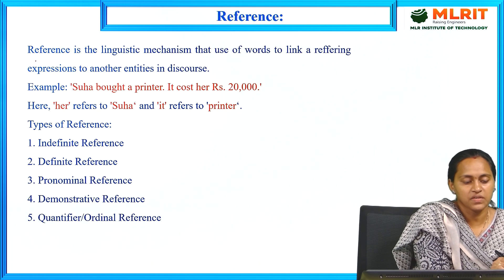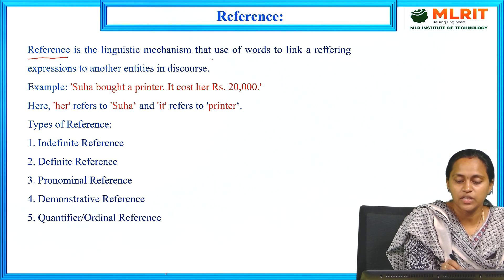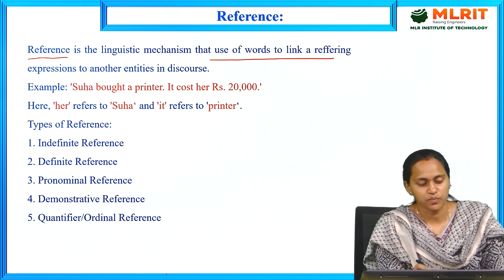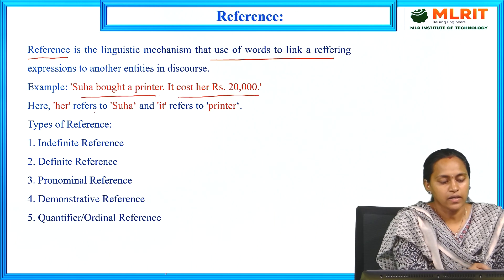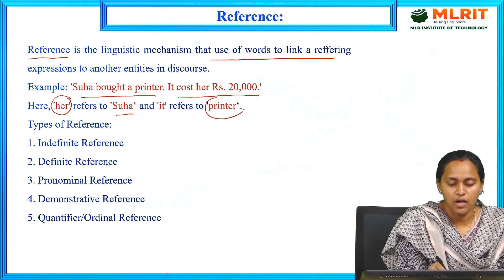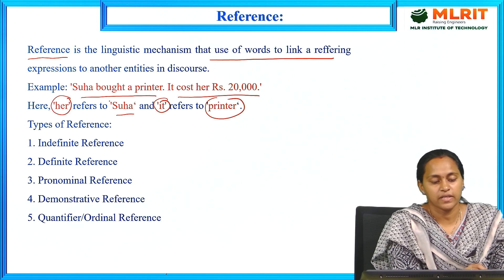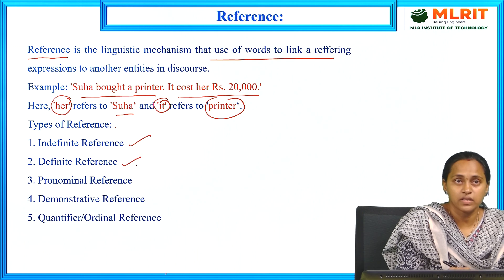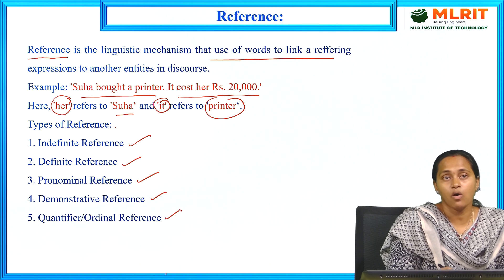Coming to reference — this is one of the key ideas in discourse processing. Reference is the linguistic mechanism that uses words linked to referring expressions, meaning sentence 1 refers to sentence 2. For example: 'Suha bought a printer. It cost her 20,000.' Here, 'Suha' refers to 'her' and 'it' refers to 'printer.' The types of references are: indefinite reference, definite reference, pronominal reference, demonstrative reference, and quantifier or ordinal reference.